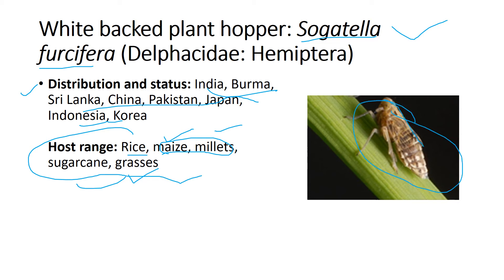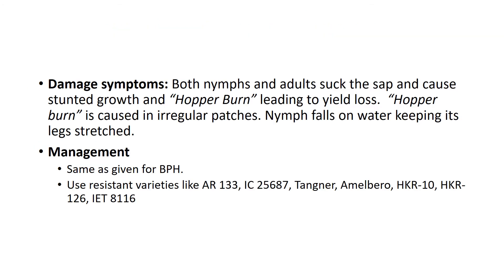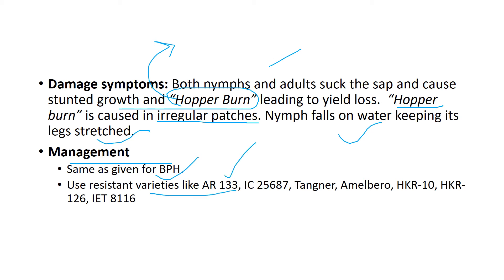The pest has a slight silvery white bag appearance, which is why it's called White Back Plant Hopper. Damage symptoms: both nymphs and adults suck the sap and cause stunted growth and hopper burn, similar to BPH, with irregular patches. Management is the same as for BPH. Additional resistant cultivar varieties include AR 133, Tangna, Amelbro, and IET 8116. Mentioning these additional points is very good for your answers.